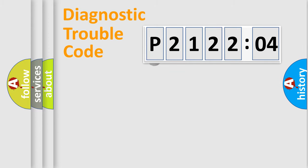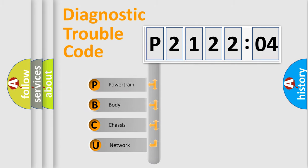Powertrain, Body, Chassis, and Network. This distribution is defined in the first character code.